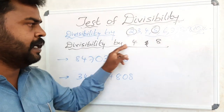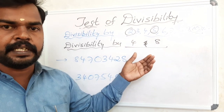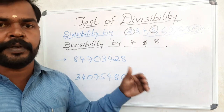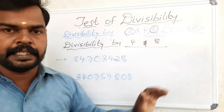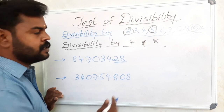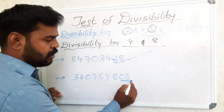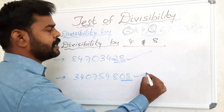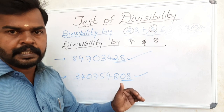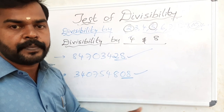Now let us see divisibility by 4 and 8 — they follow the same rule. For 4: the last two digits should be a multiple of 4. See here: last two digits are 28. Is 28 a multiple of 4? Yes, 4×7=28. So this number is divisible by 4. Next: last two digits are 08, which equals 8, and 8 is a multiple of 4, so this number is also divisible by 4.